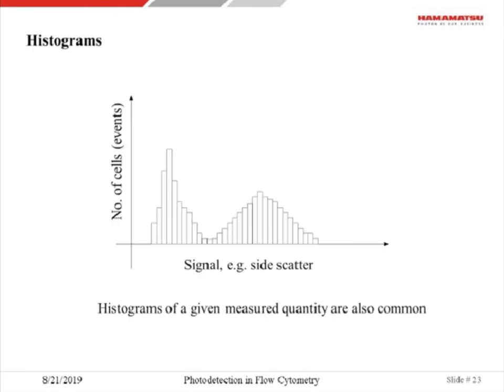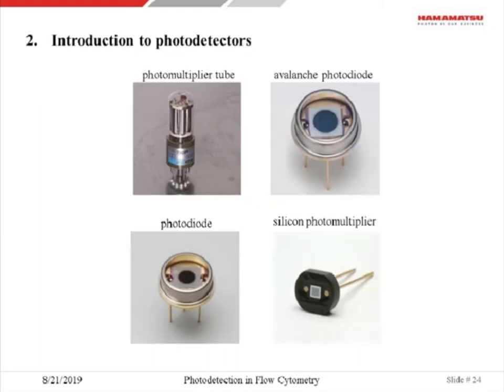Apart from scatter plots, a flow cytometrist can also produce a histogram of a single quantity—for example, amplitude in the forward scatter on the x-axis and number of events on the y-axis. This histogram also contains errors. So, let's discuss briefly the photodetectors used in flow cytometry.